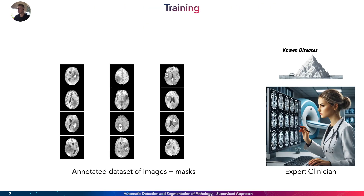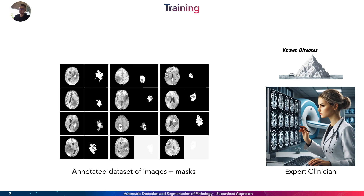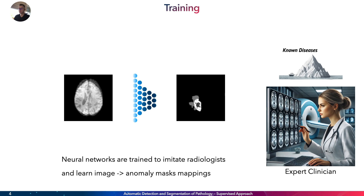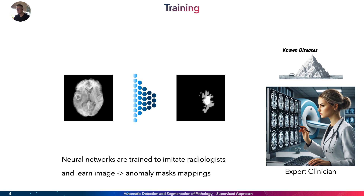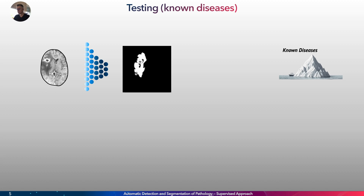A standard way to do so in clinical practice would be to gather images that are known and have expert clinicians annotate a few of them to create datasets. This can then be used to train a neural network that learns mappings from images to segmentation maps. The goal is that during inference, when a new patient comes in, the network would recognize the anomaly and produce a similar segmentation map.